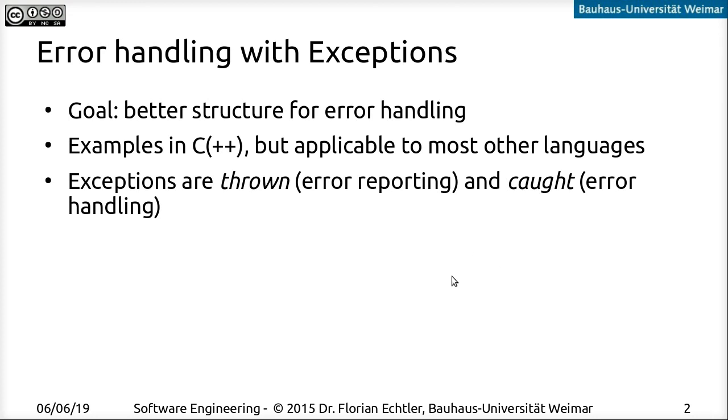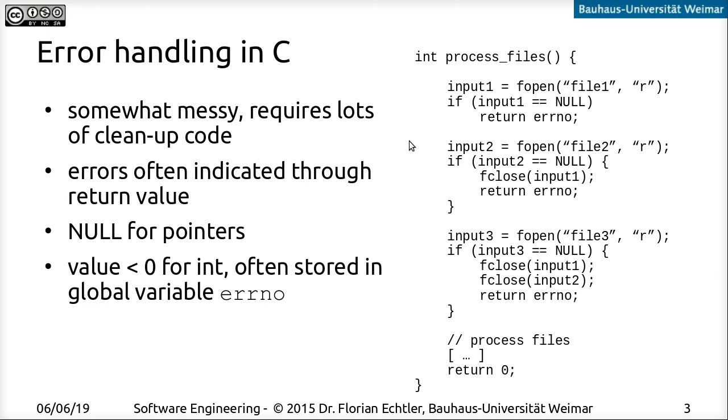So historically, one of the earliest high-level programming languages was C and C is still used quite a lot today. For example, the entire Linux kernel is written in C and let's say you have a function here process files in which you want to open three files and do something with the contents of that file and you need all three of them. So you can in C open them in order and every time you opened one of the files you need to check for the return value and if that's null, for example, that means that the function failed.